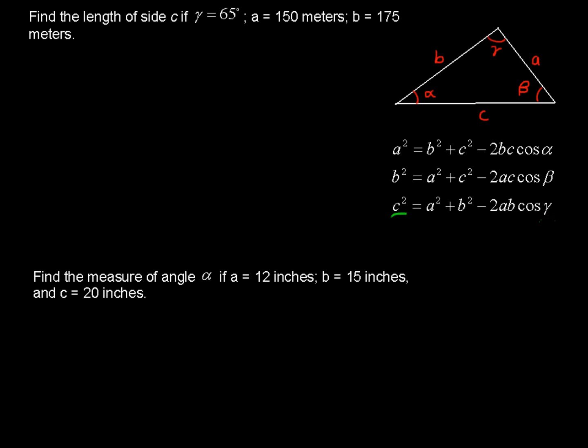Okay, for this problem, we are talking about gamma and c, so I'll leave those underlined parts in there, and we're going to be using that last equation. So, plugging this stuff in, c is what we don't know. c squared equals 150 squared, that's a squared, plus 175 squared minus 2 times 150 times 175 times the cosine of gamma, 65 degrees. The cosine of the angle that is opposite the side that we're looking for.